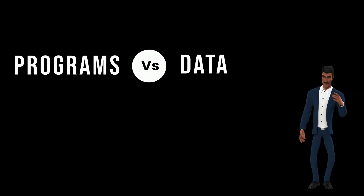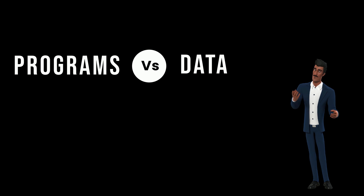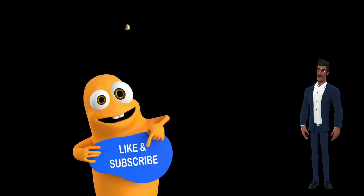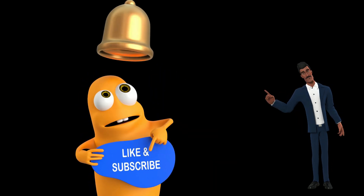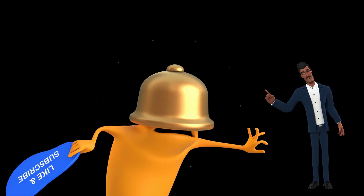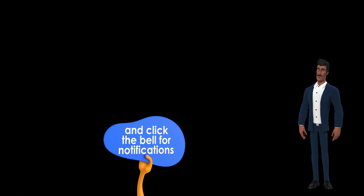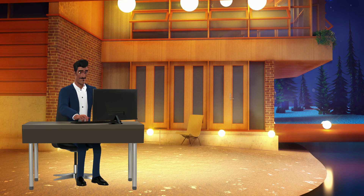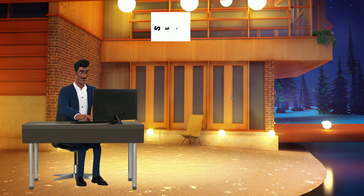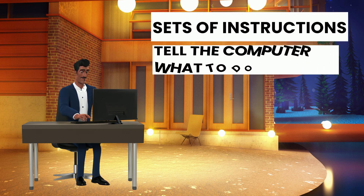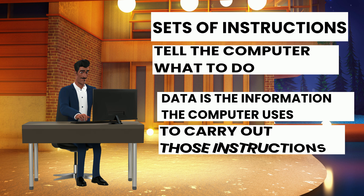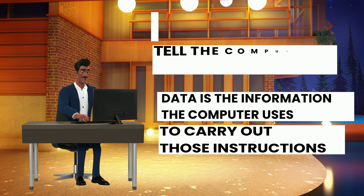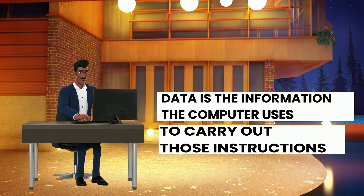I will explain briefly and we will go into more detail in another video. When you use a computer, you work with programs and data. Programs are sets of instructions that tell the computer what to do, and data is the information that the computer uses to carry out those instructions.